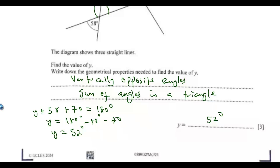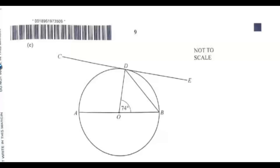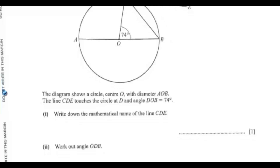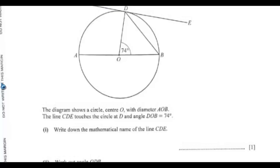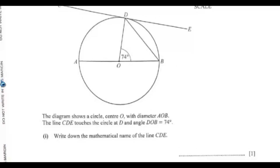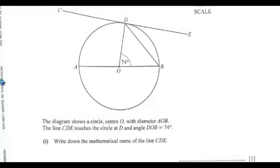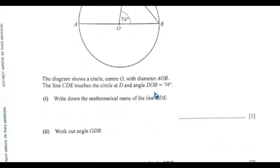Part c: the diagram shows a circle with center O and diameter OB. The line CDE touches the circle at D, and angle DOB equals 74 degrees. Write down the mathematical name of the line CDE. That is a tangent.